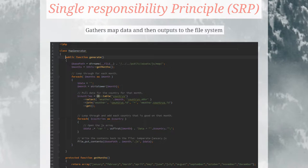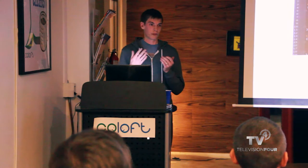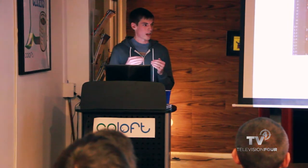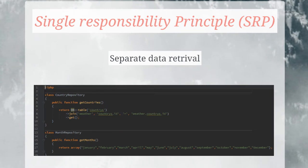Specifically, the generate function: you have the base path, it's getting some months, it's looping through those months, putting it into a variable, and then outputting that to the file system. Below that, you see a function that's getting the months. So the first part is really doing the work, and the second function doesn't quite belong there. What we're going to do is separate those pieces of data retrieval into a country repository and a month repository. Now the country repository is in charge of getting data from the database, and the month repository is in charge of getting the months.